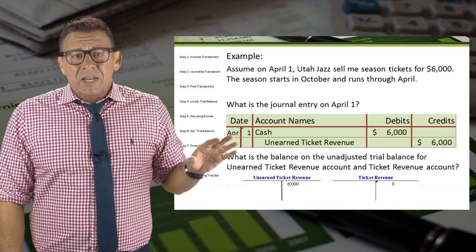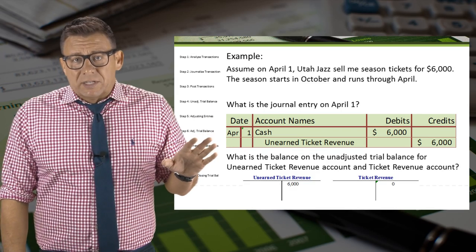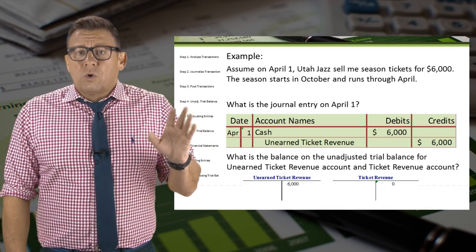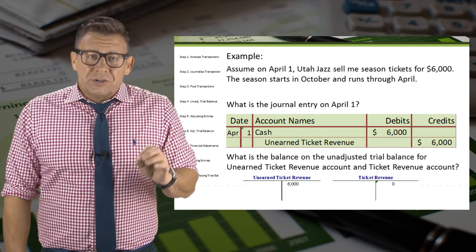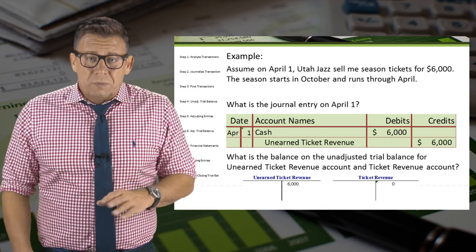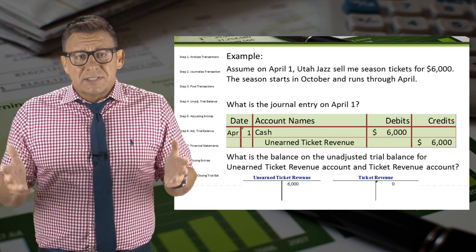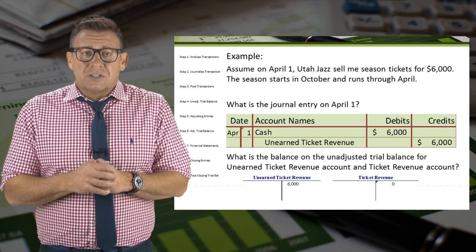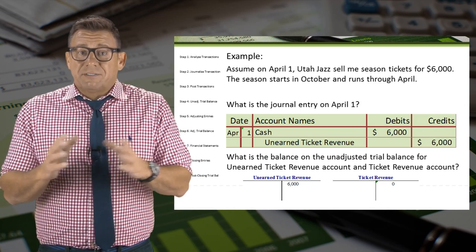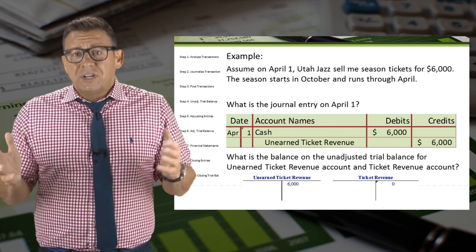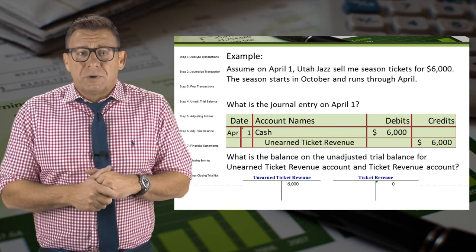So the unadjusted balance for unearned ticket revenue at the end of the year is still $6,000. As of yet, no ticket revenue has been recorded.